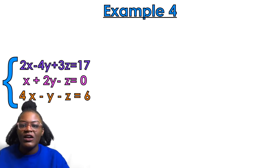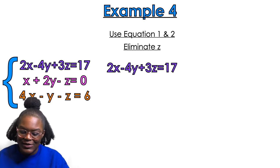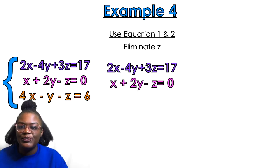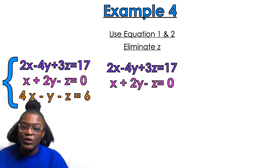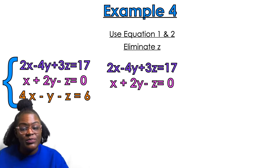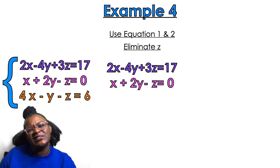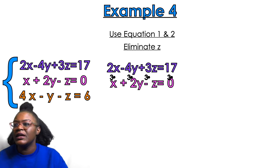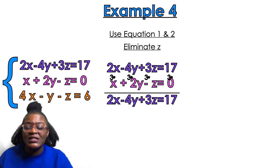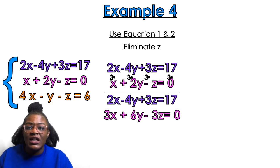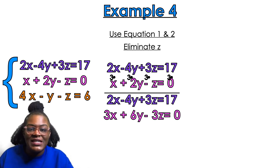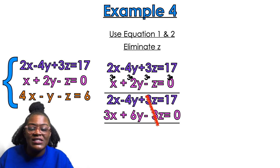Last example — example 4. We're going to use equation 1 and 2 to eliminate z. I have a coefficient of 3 and negative 1 — one's positive, one's negative already. I'm going to multiply the bottom equation by 3. The top equation stays the same, and the bottom becomes 3x plus 6y minus 3z equals 0 — anything times 0 is still 0. Now I have opposites. Adding down: 2 plus 3 is 5x, negative 4 plus 6 is 2y, equals 17.